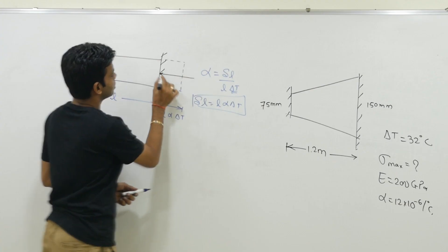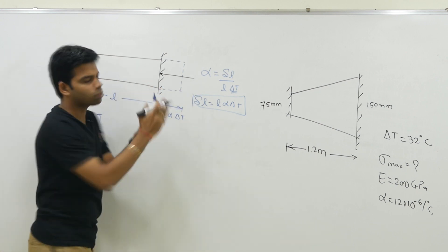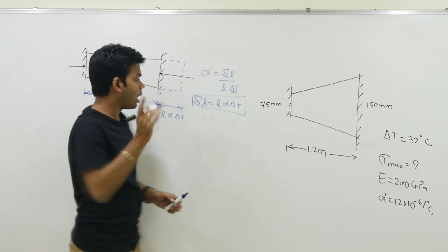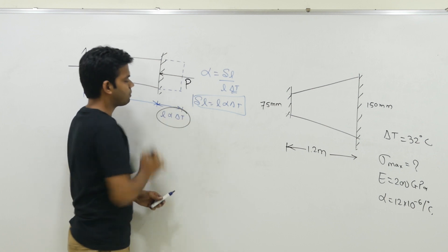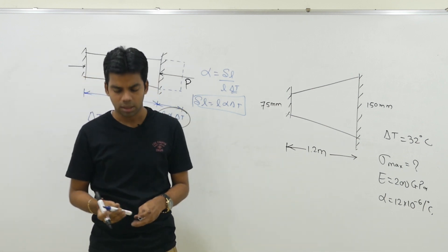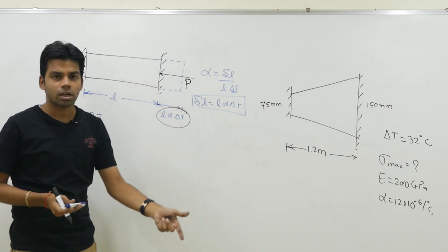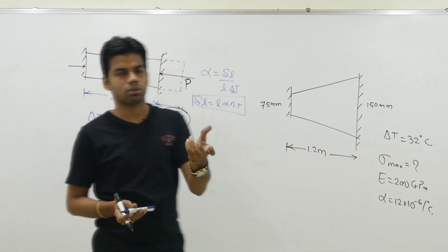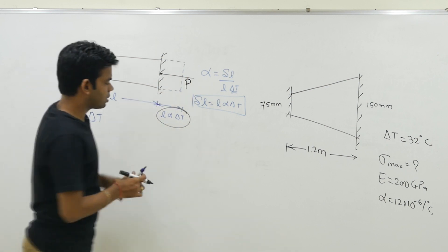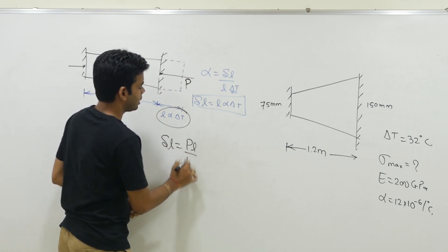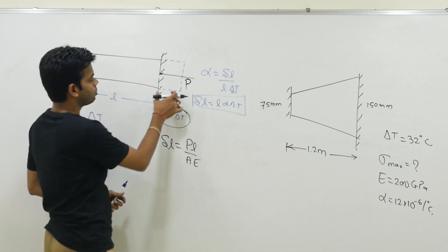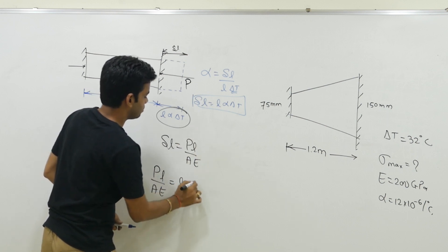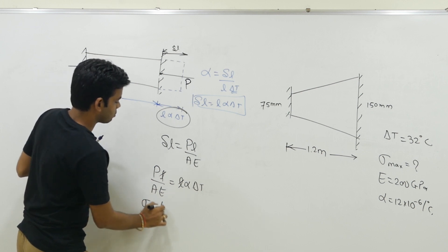But this bar is not freely expanding — the fixed supports are applying a certain force on it. When this bar tries to expand, the fixed support applies an external force which does not allow this bar to expand. The job of this force is to reduce the deflection. This force is an axial force, and the deflection due to axial force is PL/AE. Now equate the two: PL/AE = L·α·ΔT. Cancelling L from both sides, stress = E·α·ΔT. This is the simple process to find thermal stresses.